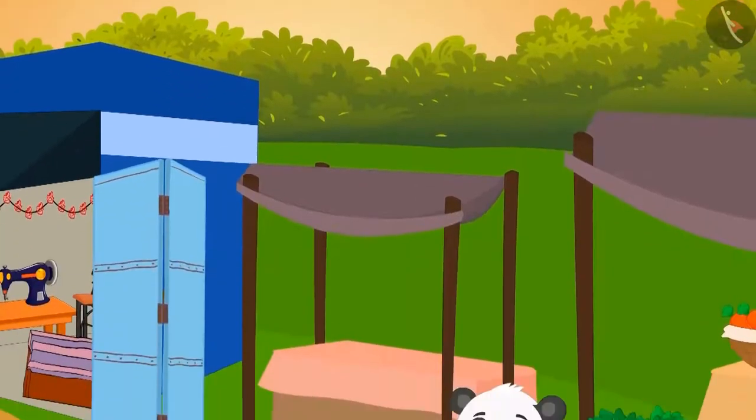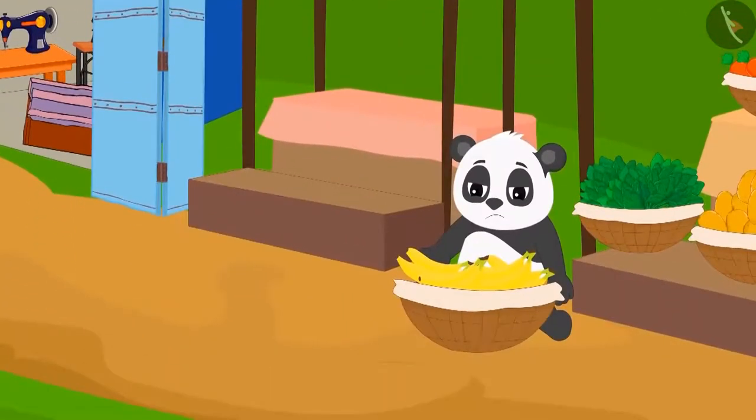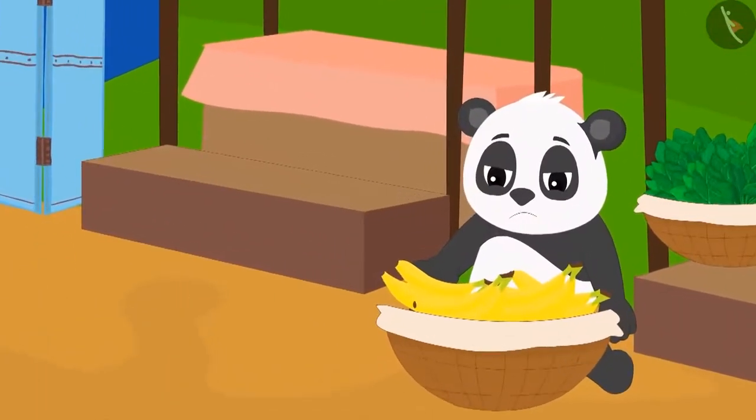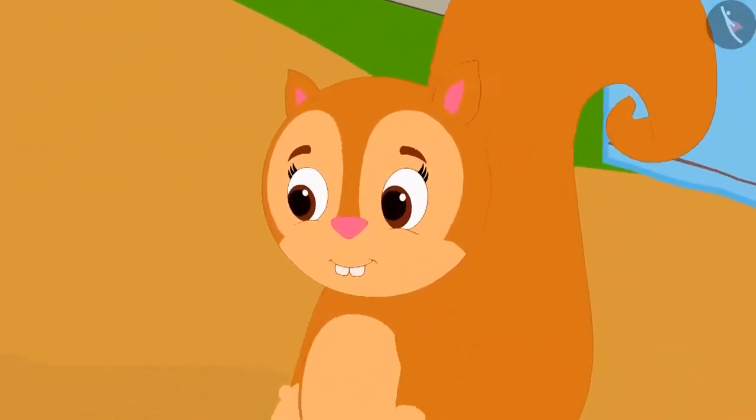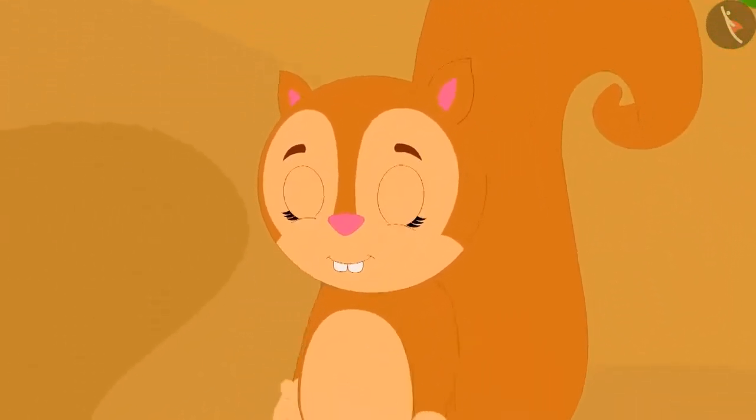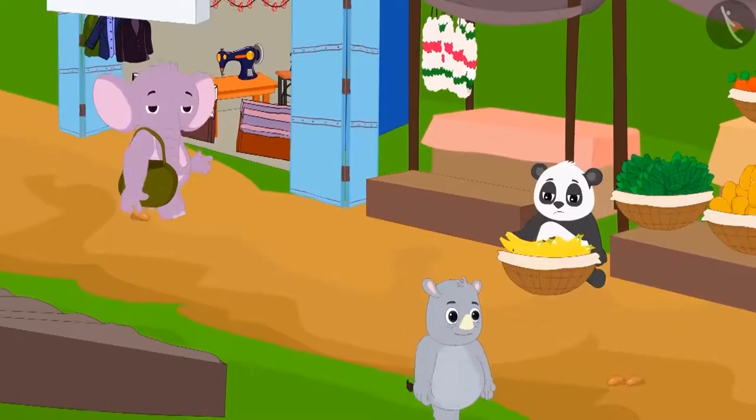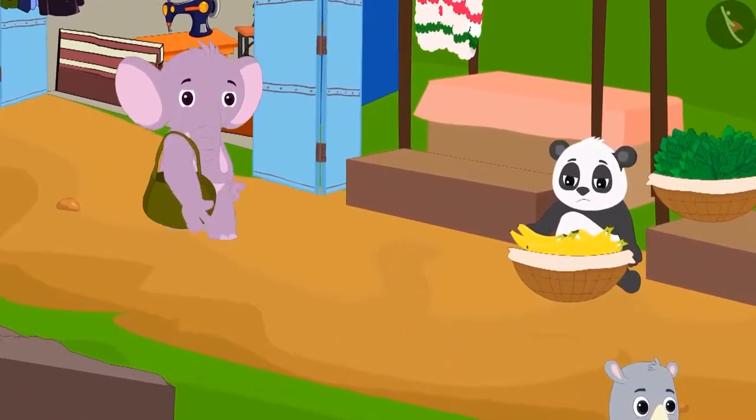The day turned into evening, but Golu couldn't sell a single banana. On the other hand, Chanda was happily going home as she sold all her flowers. Appu Elephant noticed the sad Golu and bought twelve bananas from him.